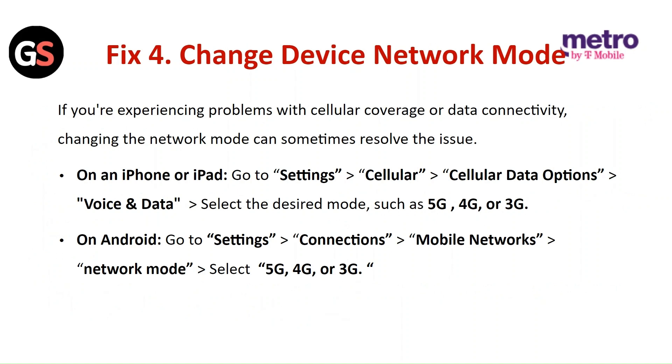On an iPhone or iPad, go to Settings, then Cellular, then Cellular Data Options, then Voice and Data. Select the desired mode such as 5G, 4G, or 3G.